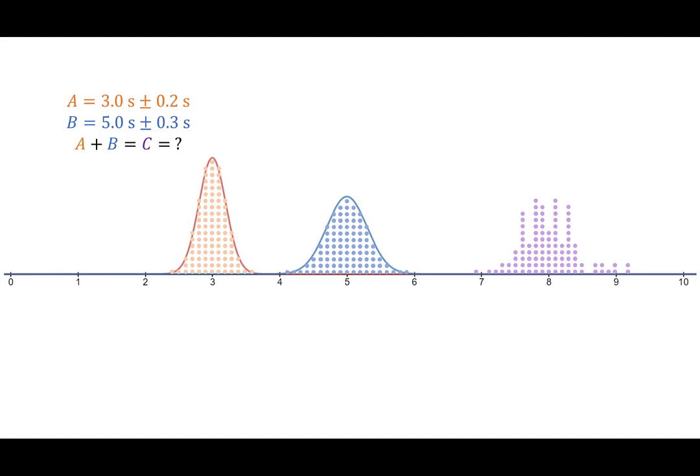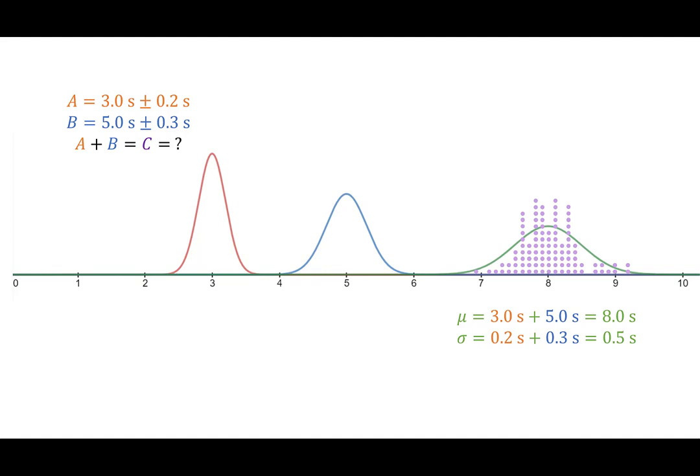However, if we naively draw a bell curve with a standard deviation which is a sum of the original two standard deviations, 0.5, you find that it doesn't quite fit the shape very well. It seems like there's some missing gap here and there's a bunch of extra bunch in near the middle.